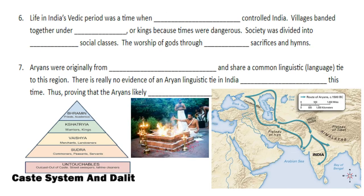Number six, life in India's Vedic period was a time when the Aryans controlled India. Villages banded together under rajas, or kings, because times were very dangerous and the rajas offered protection, primarily with their military force. Societies were also divided into four social classes — the Dalit, or sometimes known as the caste system — with the Brahmin, the Kashitras, the Veshas, and the Sudras. The worship of gods through fire sacrifices and hymns was also very common in the Vedic period.